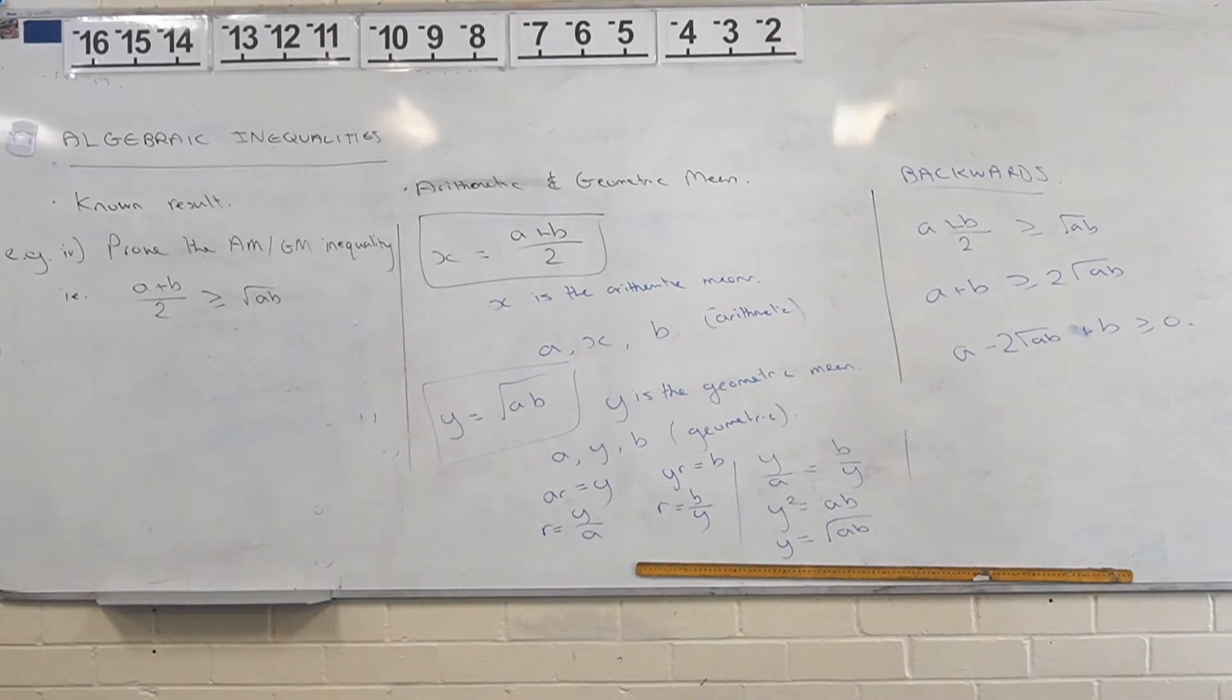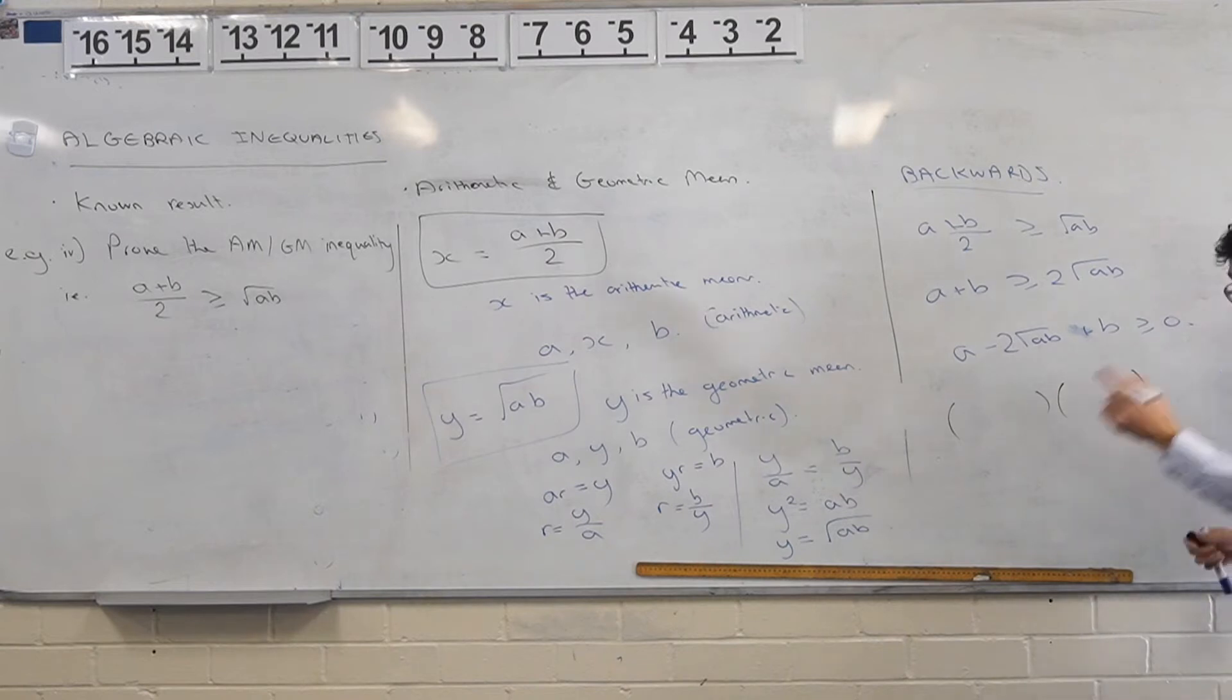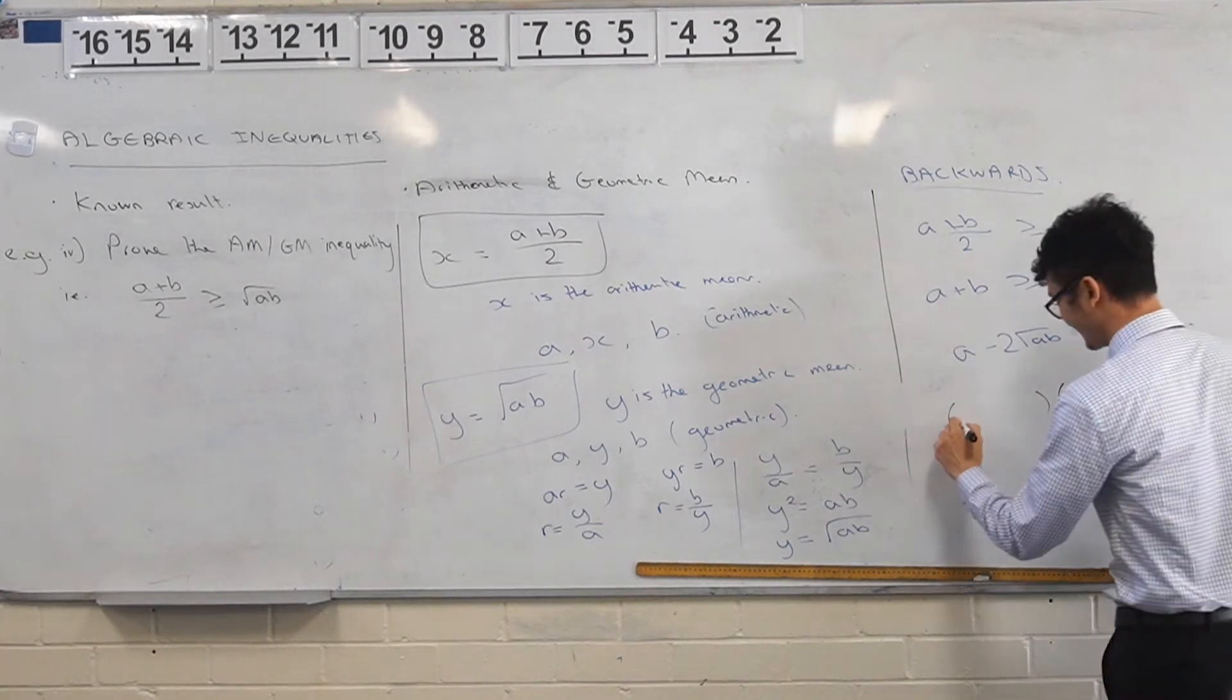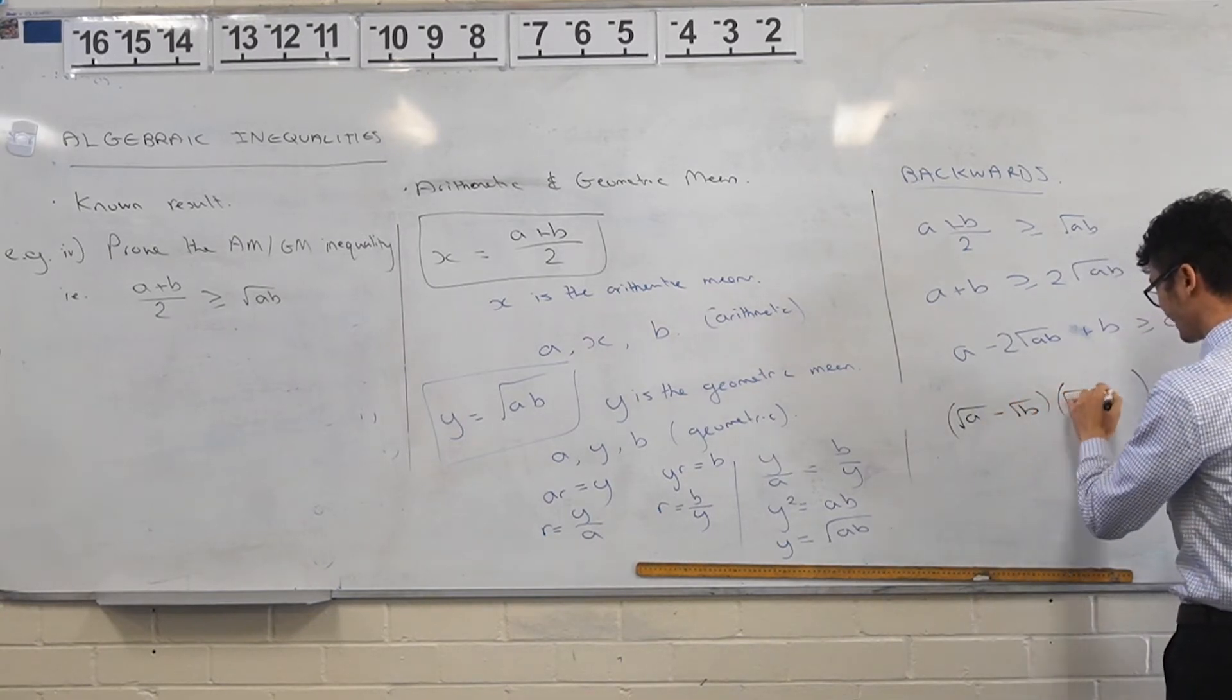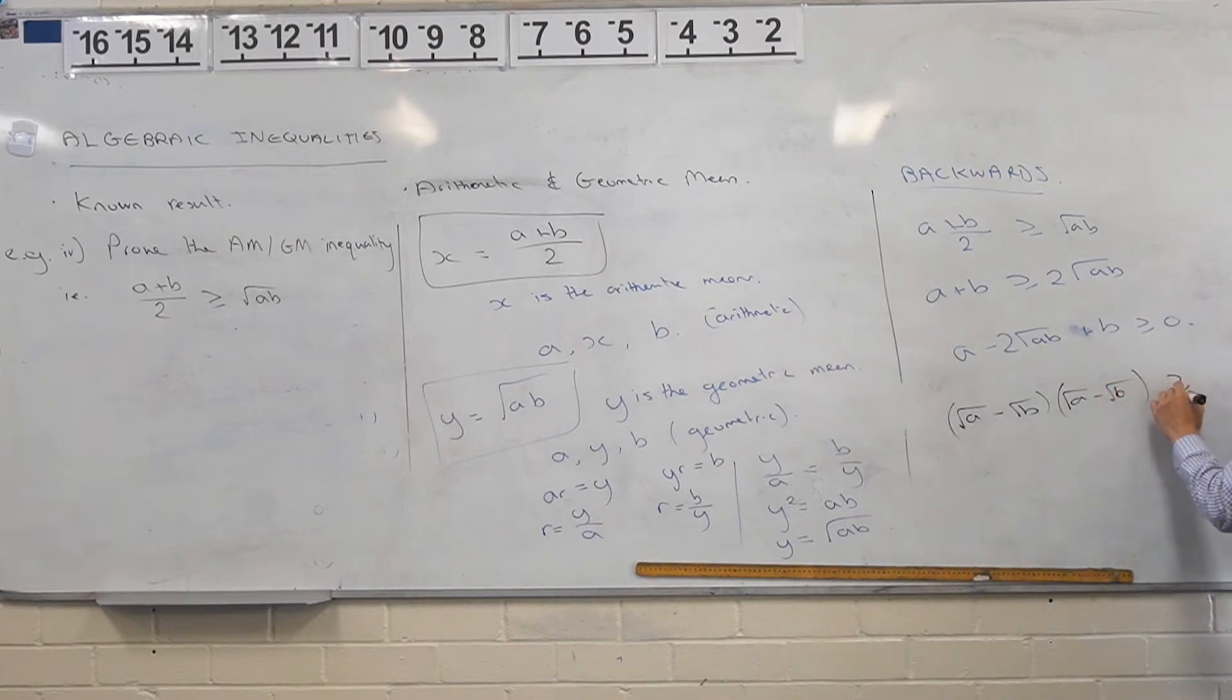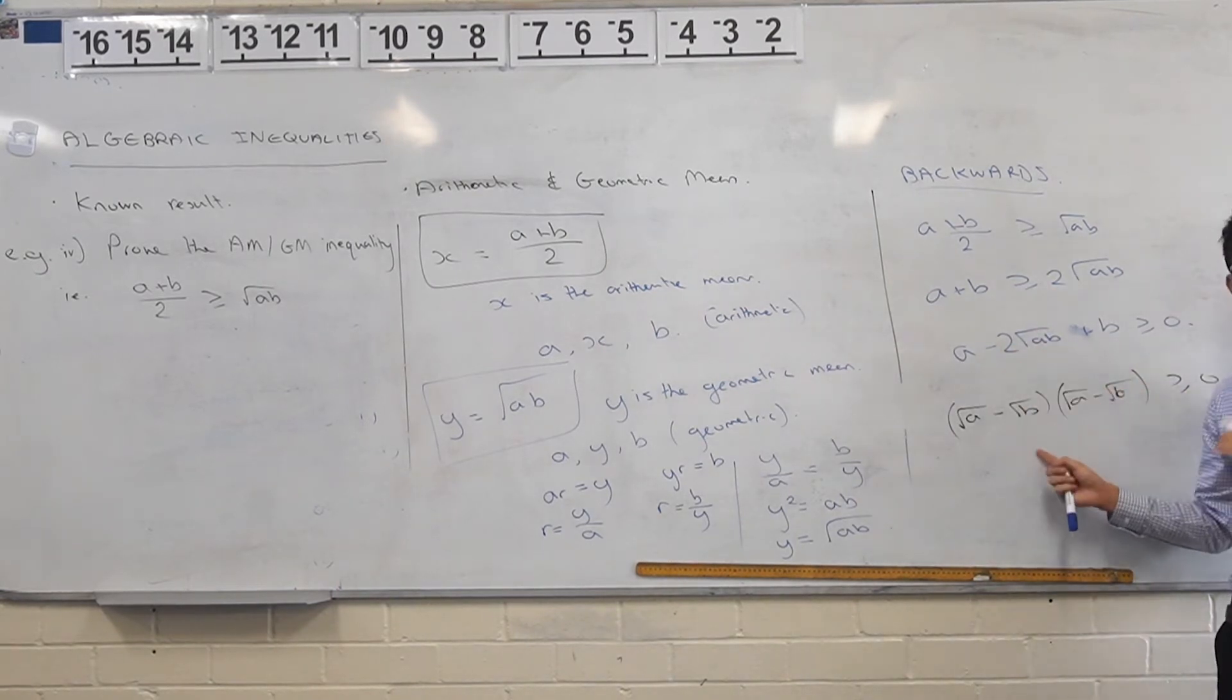What would the factorization be? Because it's a perfect square, this is going to be the same. Can you see how these are the same? If you expand this out you'll end up getting square root of a times square root of a, that's just a, square root of b times square root of b, that's b, and these two middle terms together. This step to this step is not immediately obvious.